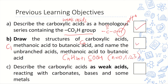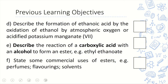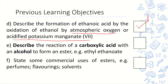All carboxylic acids are weak acids and follow the same reactions as other acids — they react with carbonates, bases, and metals. We also looked at how carboxylic acids are formed: they are formed via oxidation, either by oxygen in the air or by an oxidizing agent.